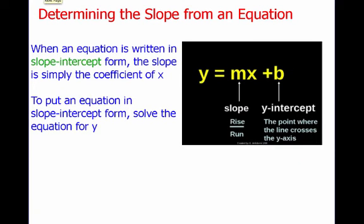So how are we going to figure out slope? Well, there are a number of different ways. One of them is determining the slope from an equation. And when an equation is written in slope-intercept form, then the slope is simply the coefficient of x. And slope-intercept is this form right here, y equals mx plus b.